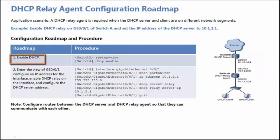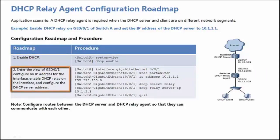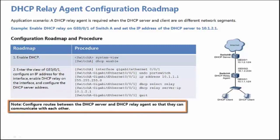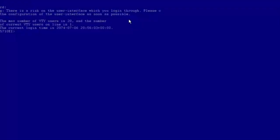Step 1: Enable DHCP on the DHCP Relay Agent. Step 2: Enter the view of GE0/0/1 that is connected to DHCP Clients. Configure an IP Address for the interface. Enable DHCP Relay and configure the DHCP Server Address on the interface. Note that routes between the DHCP Server and the DHCP Relay Agent must be configured so that they can communicate with each other.